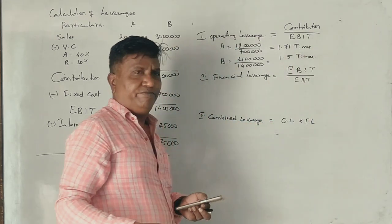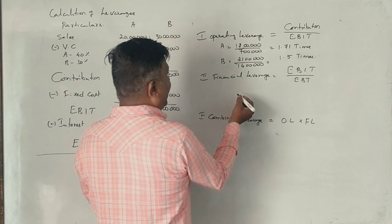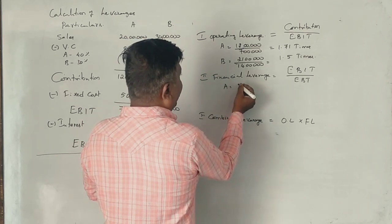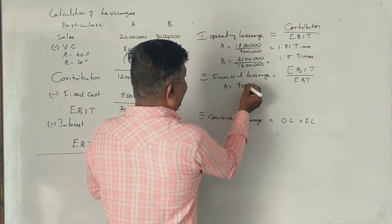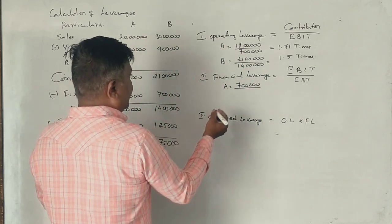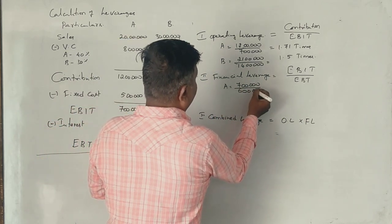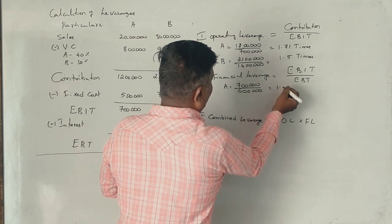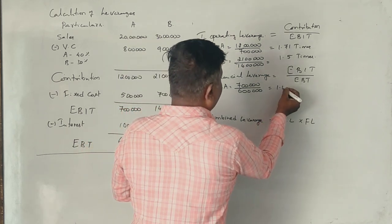Next, financial leverage. For Firm A, EBIT 7 lakhs divided by EBT 6 lakhs, equals 1.16 times.